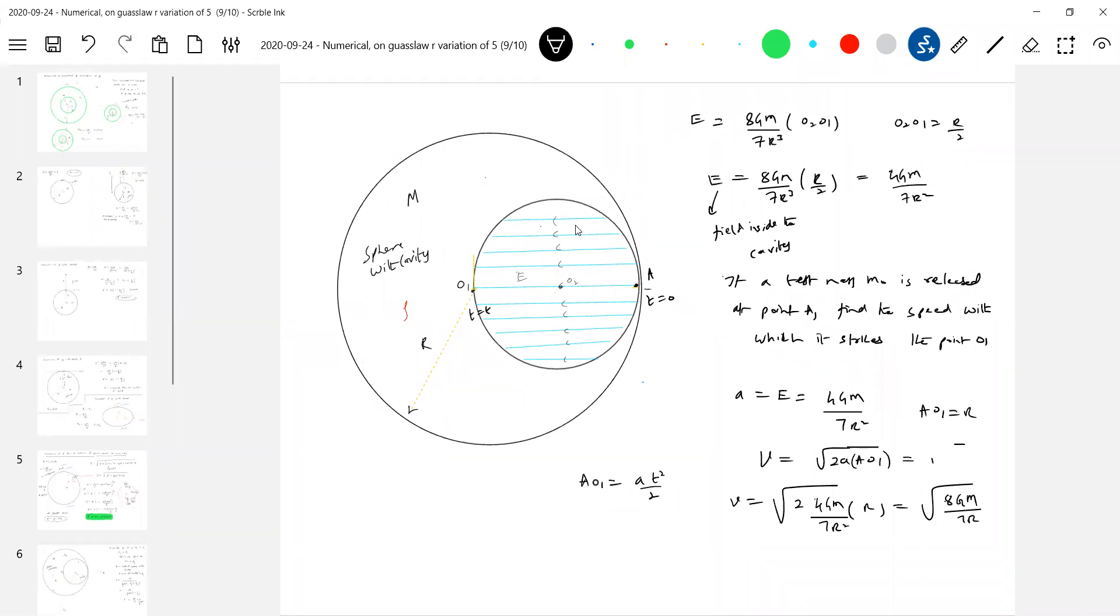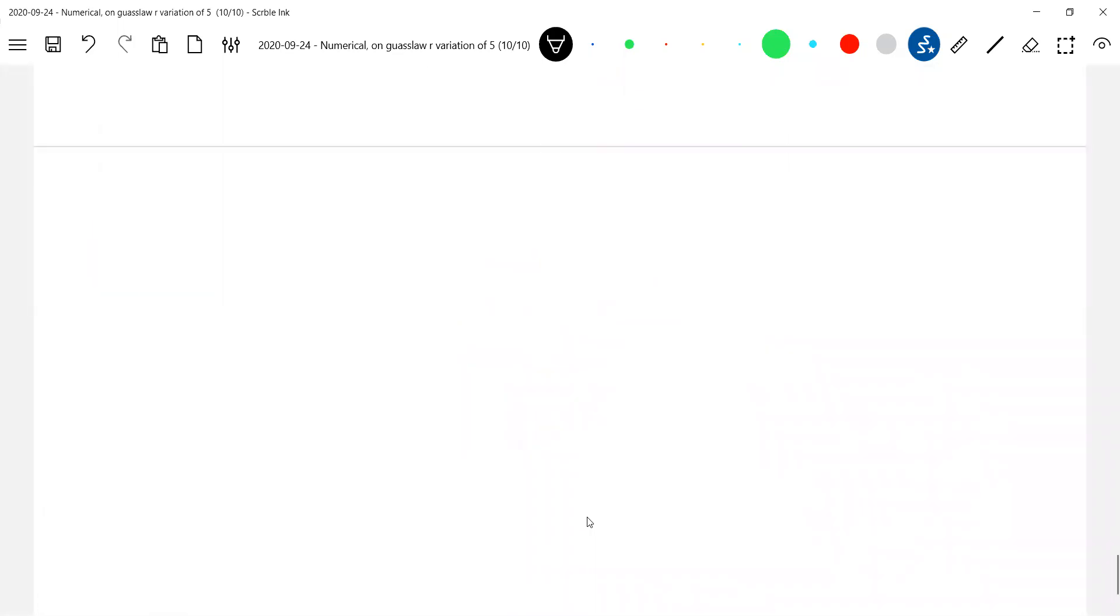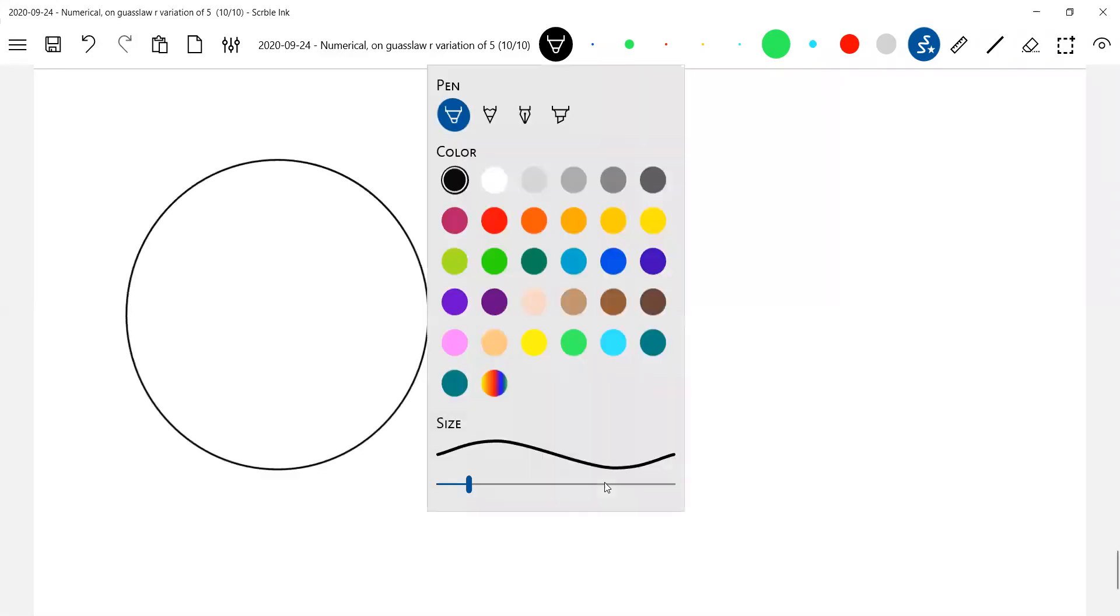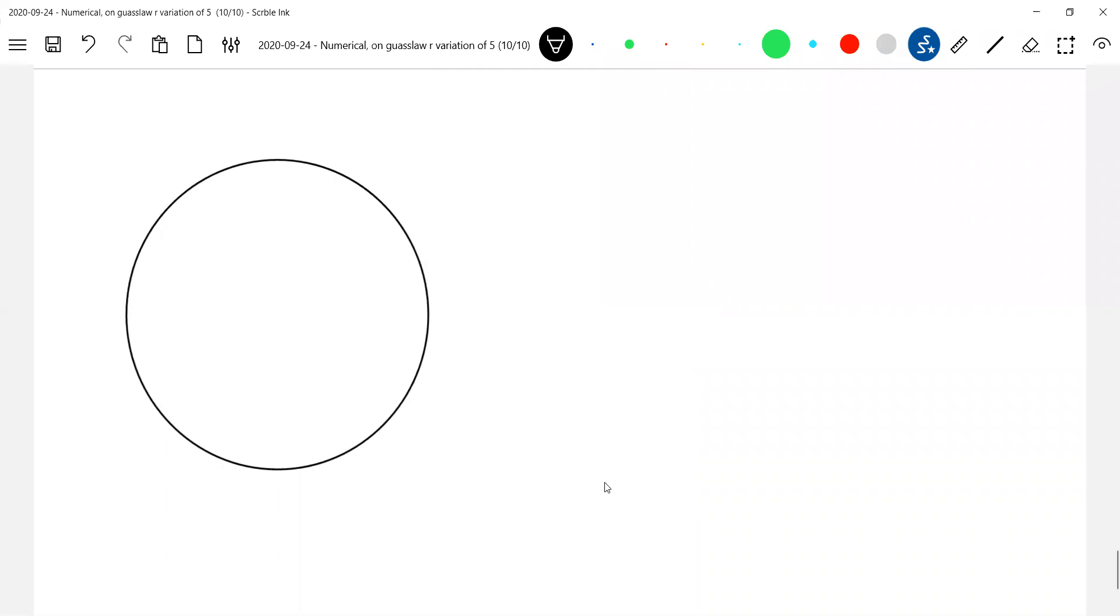If I shift the cavity somewhere, wherever you go the field inside the cavity will be uniform and it will be directed along line joining the center of cavity to center of the sphere. These are some application problems inside the cavity. Same numerical I think in Erido is available with density given. I think you can easily manage if they give in terms of density. If they give cavity, not only this, I'll shift the cavity somewhere here and that too not in contact, let it be like this.